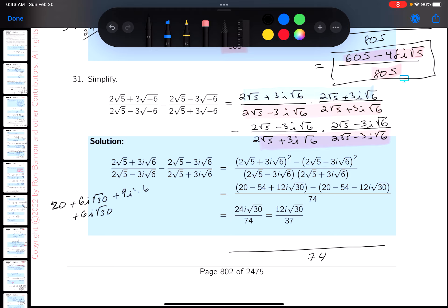And then what do you get? Plus 9i squared times 6. Well, that's pretty easy to do, because that would be minus 54. So I get minus 34 plus 12i root 30. Let me write that down.